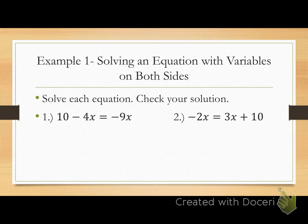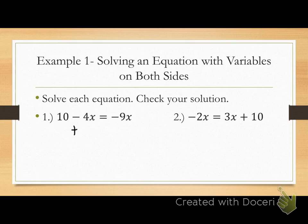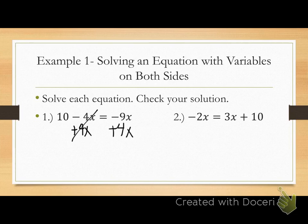Step two: use inverse operations — we're dealing with variables first. To collect variables to one side, add 4x to both sides. The 4x cancels out on the left. On the right, negative 9x plus 4x gives negative 5x. So I've collected my variables to one side, leaving 10 equals negative 5x.